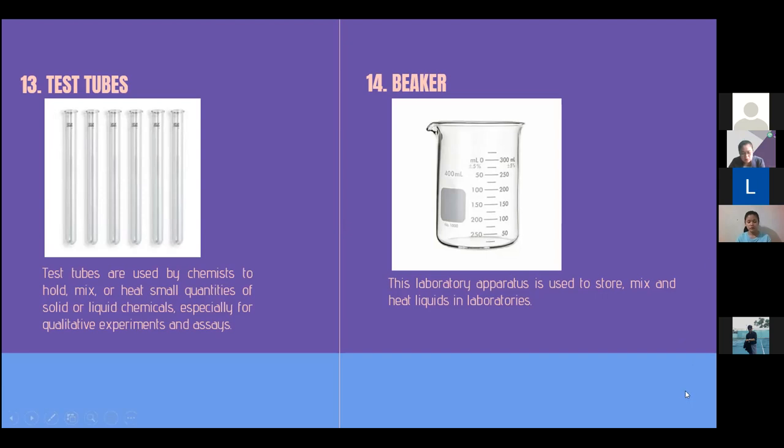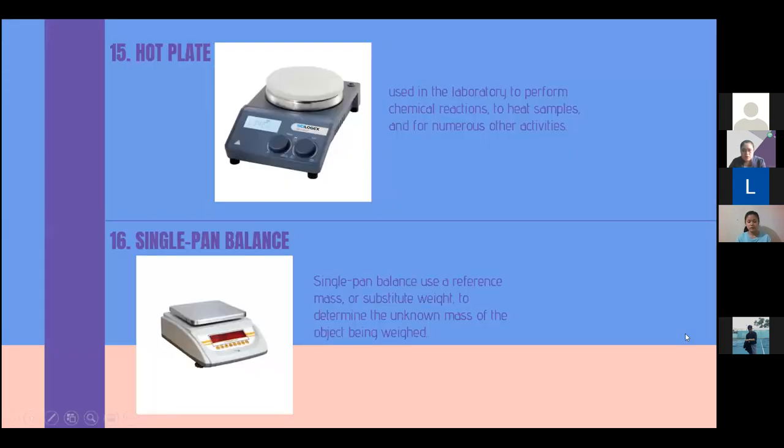For number 15 we have the hot plate. It is used in the laboratory to perform chemical reactions, to heat samples, and for numerous other activities. A hot plate is a portable self-contained small appliance cooktop that features one or more electric heating elements or gas burners. And for number 16 we have single pan balance. Single pan balance uses a reference mass or substitute weight to determine the unknown mass of the object being weighed.